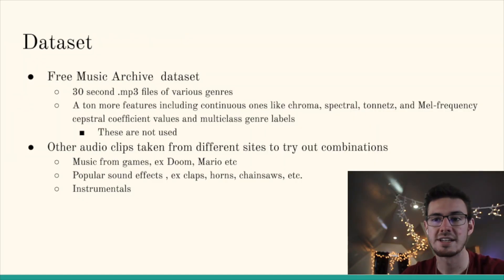Let's talk a little bit about the dataset and the data that we used for our machine learning. So primarily we use the Free Music Archive dataset or the FMA, which is a dataset that contains thousands of 30-second mp3 files of various genres. Further, we also took audio clips from different sites and other audio clips that we could find around the internet to try out different combinations on our finished model. For example, we took some music from games such as Doom and Mario, we found some popular sound effects, some claps, some horns, we found a chainsaw too, and a couple of instrumentals as well.